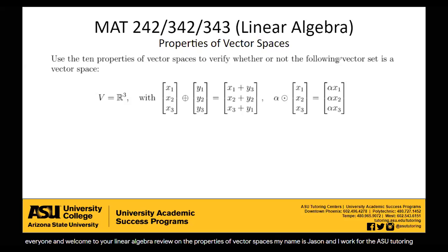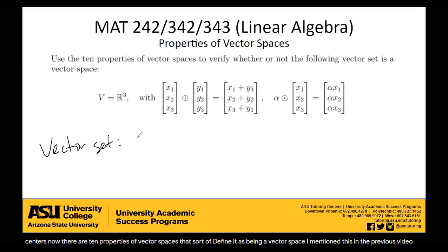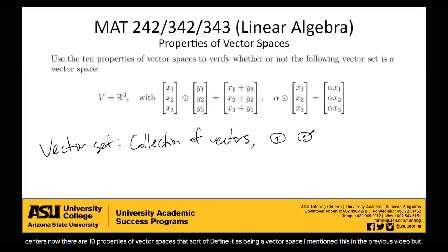There are 10 properties of vector spaces that define it as being a vector space. A vector set is a collection of vectors, in addition to some additive property and some scalar multiplicative property. So you have a collection of vectors, you have some way to add those vectors, and you have some way to scale or multiply those vectors. That's a vector set.